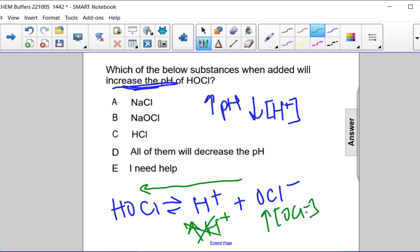So we need to find a salt that has OCl-, the conjugate base OCl-. And the only one that does is answer choice B.